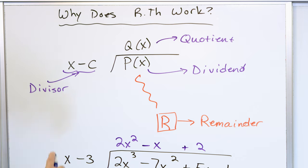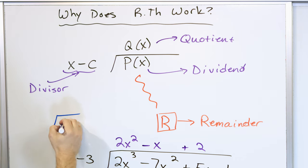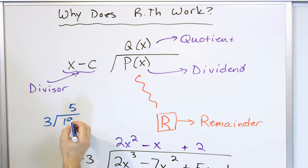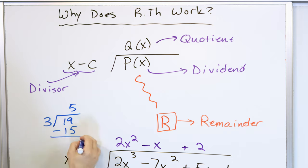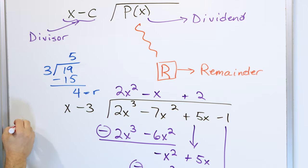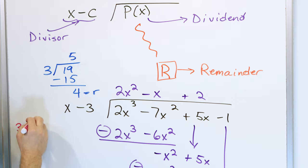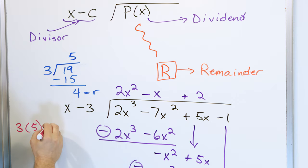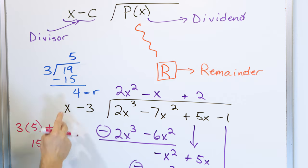This is exactly the same as dividing 19 by 3 — you get 6 remainder 1, so 3 times 6 plus 1 equals 19. So to check the division, you take what's in front, multiply by the quotient, and add the remainder back in. In order to check this division, you take the divisor, multiply by the quotient, add the remainder, and if you get what's underneath, the division was correct.